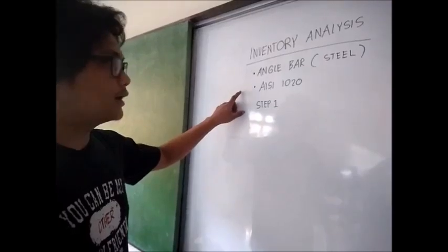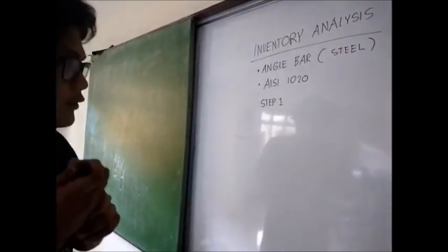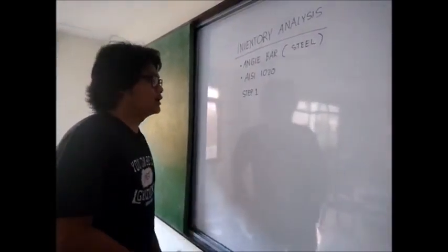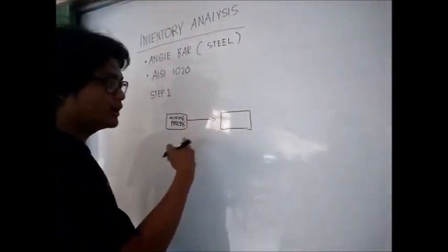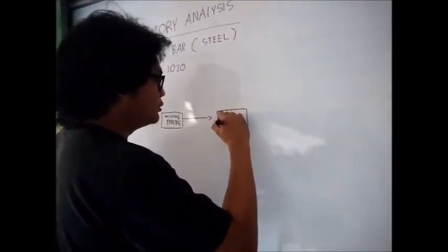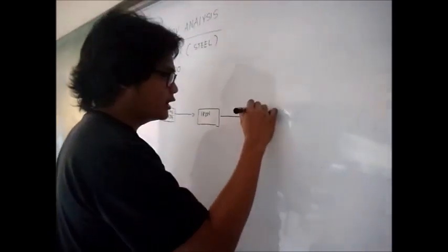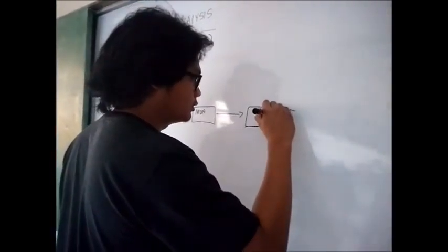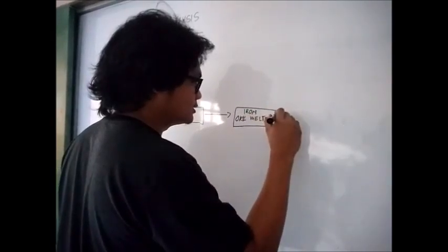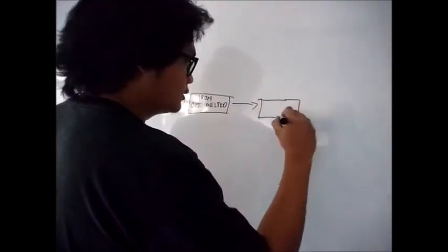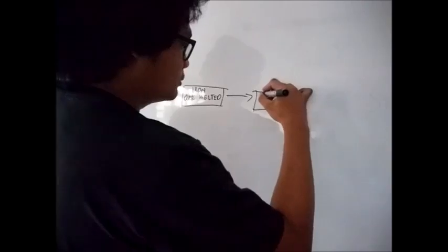The first step in making the angle bar is mining. After the mining process, the iron ore will be extracted. The next step, the iron ore will be melted through a blast furnace. In that blast furnace, the by-product of this molten ore is the so-called molten steel.